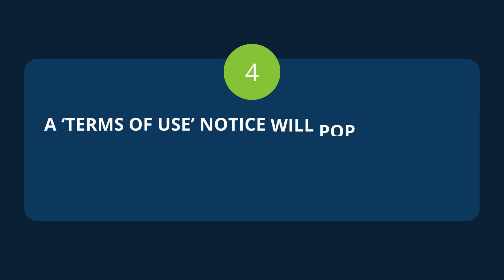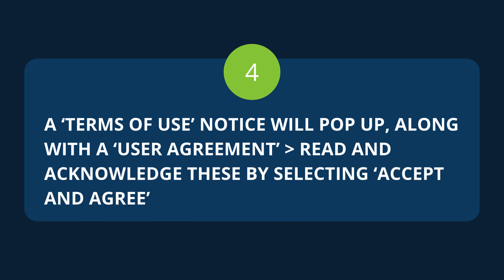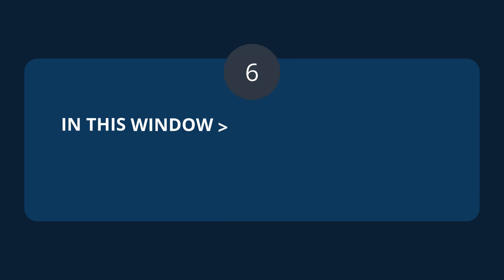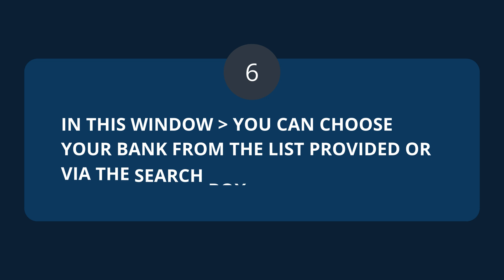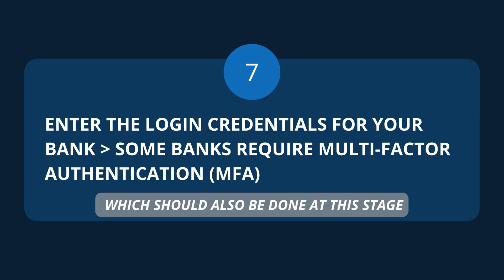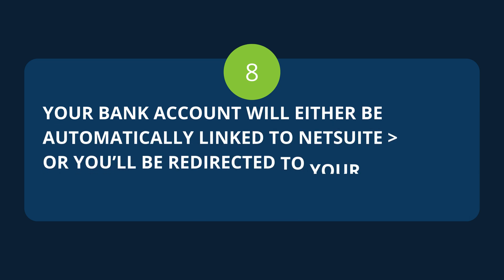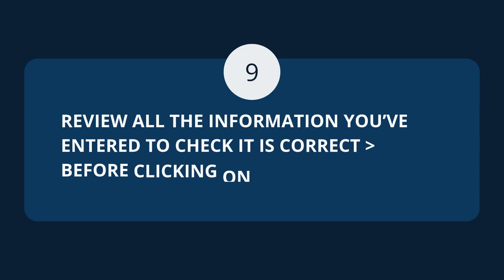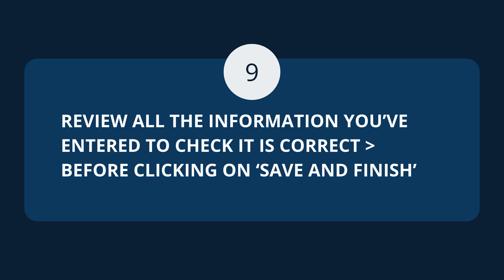A Terms of Use notice will pop up along with a User Agreement. Read and acknowledge these by selecting Accept and Agree, to open the Connection Configuration Setup pop-up window. In this window, you can choose your bank from the list provided or via the search box. Next, enter the login credentials for your bank. Some banks require multi-factor authentication, which should also be done at this stage. After this step, your bank account will either be automatically connected to NetSuite or you'll be redirected to your bank's website to authenticate the connection.